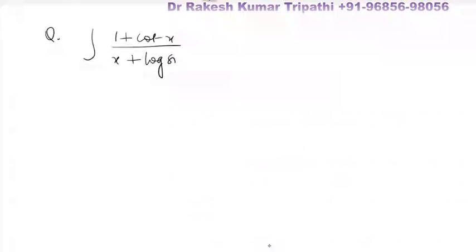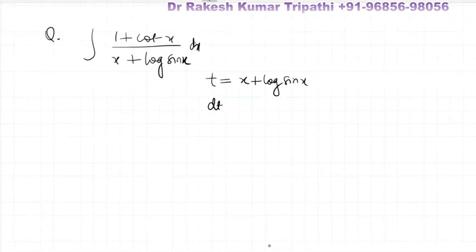Now you can observe that the numerator is the derivative of the denominator, so we shall put t equal to the denominator, x plus log sin x. As soon as we put it, at the same moment we differentiate both sides with respect to x. dt by dx will be 1 plus the derivative of log sin x, which is 1 upon sin x times the derivative of sin x, cos x.